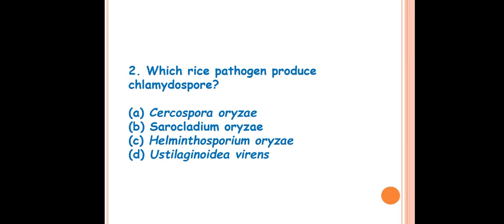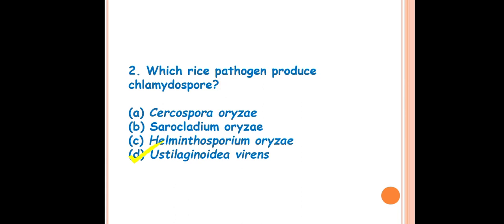The next question is: Which rice pathogen produces chlamydospores? The answer is D — Ustilaginoidea virens. Ustilaginoidea virens produces a special type of asexual spore called chlamydospores. These are asexual spores produced due to the thickening of the cell wall of the intercalary cell. If you want to know more about asexual spores and which fungi produce which type, please see my previous video on asexual reproduction of fungi — link is in the description.